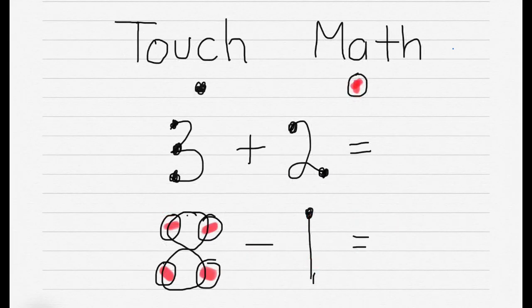Using the touch method, we'll use counting on, so we know our first term is 3, and we can count on from there. So we would have 4, 5. So our answer would be 5.